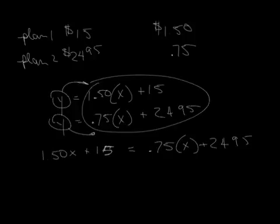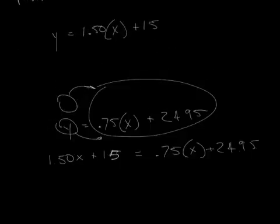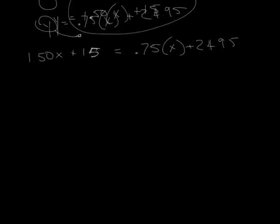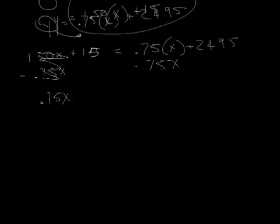Okay, so notice all I have are X's, and that makes life a lot easier for me. Okay, so let's see. Let's bring these X's over here. So that gives me $1.5 times, or minus .75 is .75, and that gets rid of that, and that. Plus 15 equals 24.95.